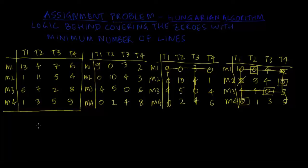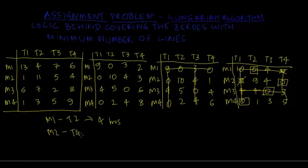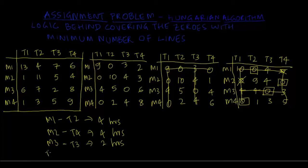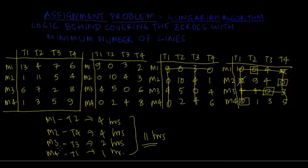The final assignment is: machine one gets task two, which takes 4 hours from the original matrix; machine two gets the fourth job, which takes 4 hours; machine three gets the third task, which takes 2 hours; and machine four carries out the first task, which takes 1 hour. Total: 4 + 4 + 2 + 1 = 11 hours. This is the best assignment — completing all four tasks in minimum time of 11 hours.